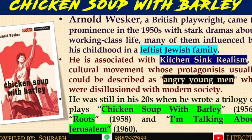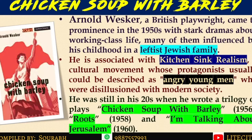Wesker is a British playwright who came to prominence during the 1950s — the time of the Cold War, when the world was divided between American capitalism and Russian communism. This left-wing wave was threatening Europe with new alliances. Wesker was one of the left-wing writers of that time. His stark dramas about working-class life were influenced by his own childhood in a leftist Jewish family, making him doubly marginalized — a leftist in a highly capitalized European society and from a Jewish family in a predominantly Christian society.